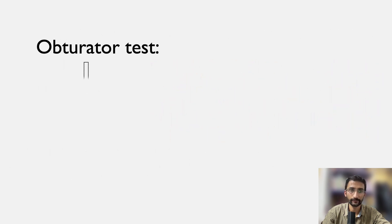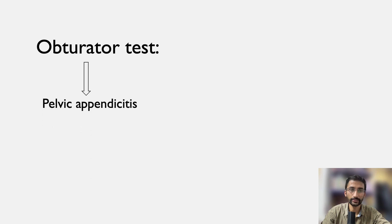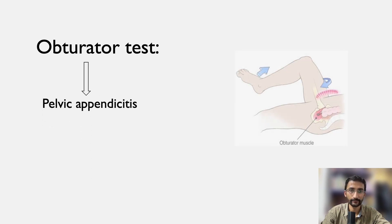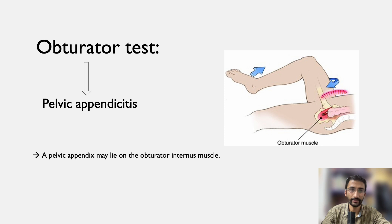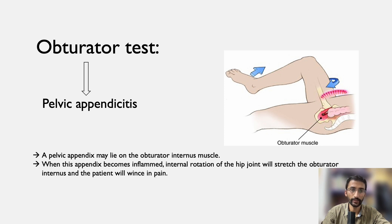The obturator test is done in case of pelvic appendicitis. A pelvic appendix may lie on the obturator internus muscle. When this appendix becomes inflamed, internal rotation of the hip joint will stretch the obturator internus and the patient will wince in pain.